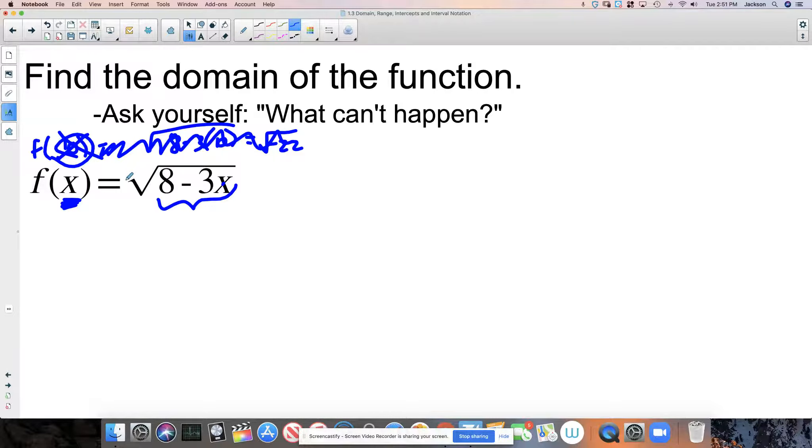And rather than just checking numbers over and over and over again and saying, does 10 work? Does 11 work? Does 12 work? We take this and we say, I know that whatever this ends up being has to be greater than or equal to zero. So take everything that is under the radical and say, take it off to the side. Set up a different inequality and say, this has to be greater than or equal to zero.